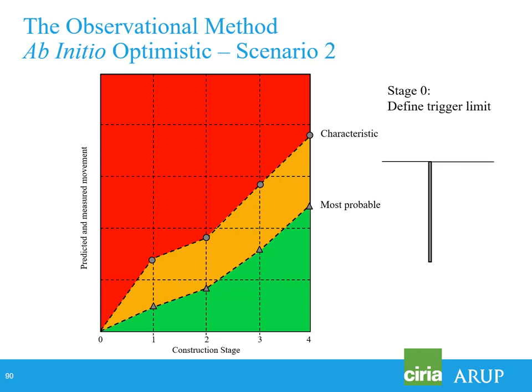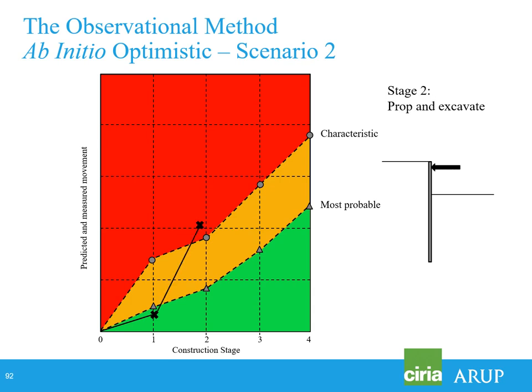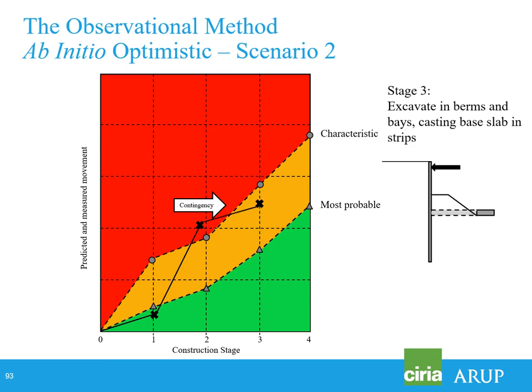In Scenario 2, using exactly the same wall and sequence: initial excavation, everything's in green. We excavate further, install the prop, but movements have gone over the most probable and into the red zone above characteristic. At that point we know the ground is not behaving in accordance with the most probable approach — it's actually closer to characteristic. So we have to take action and apply our contingency, which was pre-planned, and start excavating bays and berms and installing the base slab before completing excavation. We didn't make the massive savings we promised our client, but at least the wall didn't fall down.